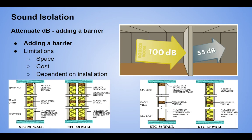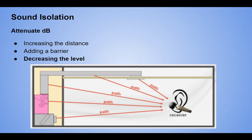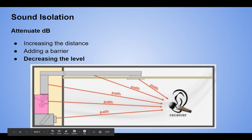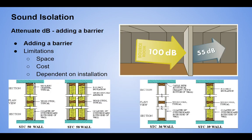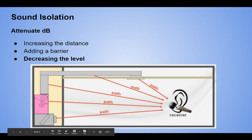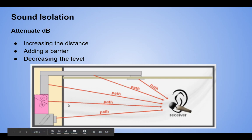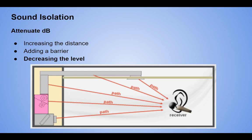Limitations of adding a barrier include space, cost, and dependence on installation. If we're at 100 dB and we can only achieve 45 dB reduction — we don't have enough room for a double stud wall. We've got to go back and decrease the level on the source side, change the noise, or move the equipment to the other side of a corridor. Now there are two walls the noise has to get through and we don't need a 58 or 60 STC wall.